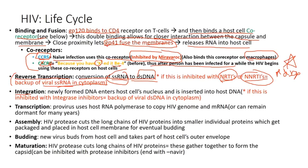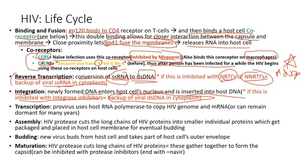Once double-stranded DNA is formed, it enters the host cell nucleus and is inserted into the host DNA using an enzyme called integrase — produced by the virus itself. We can target this with integrase inhibitors, another class of drugs. If we block integrase, the viral DNA cannot integrate, and we get a backup of viral double-stranded DNA in the cytoplasm or nucleus.